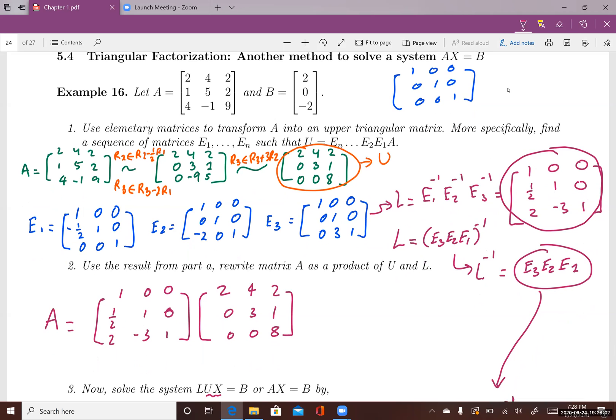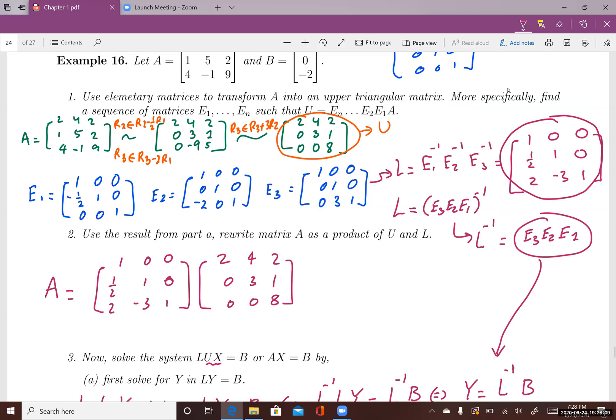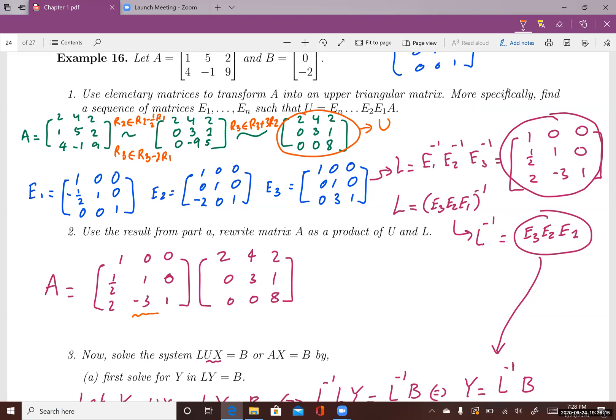If you want to check whether A equals L times U, you should do that. If you take this as L, this is a lower triangular matrix, and this is U, the upper triangular matrix. In fact, A equals L times U.